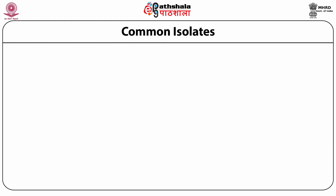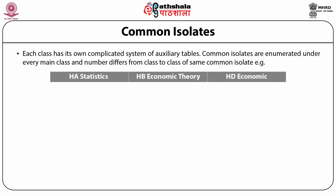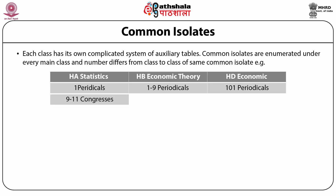Common isolates or form divisions: Each class has its own complicated but unique system of auxiliary tables. Common isolates are enumerated under every main class and the number differs from class to class for the same common isolates. For example, under HA Statistics, Periodicals are denoted by 1. But under HB Economic Theory, Periodicals are given numbers 1 to 9. Similarly, Congresses or Conferences under HA Statistics are 9 to 11. Under HB Economic Theory they are 21 to 29. And under HD Economics, Conferences and Congresses are denoted by 1.0.5.